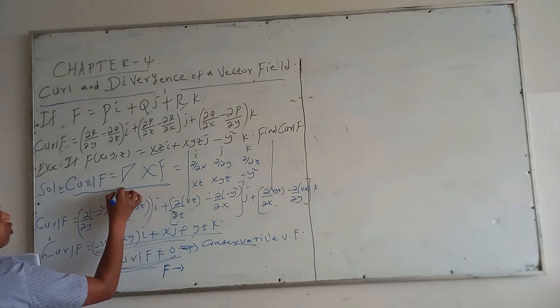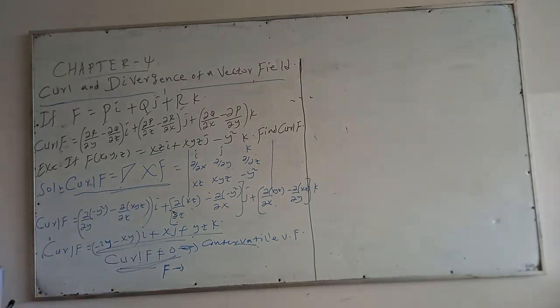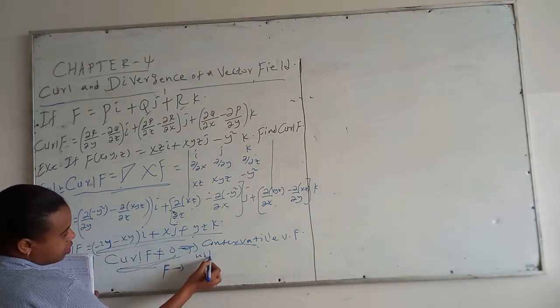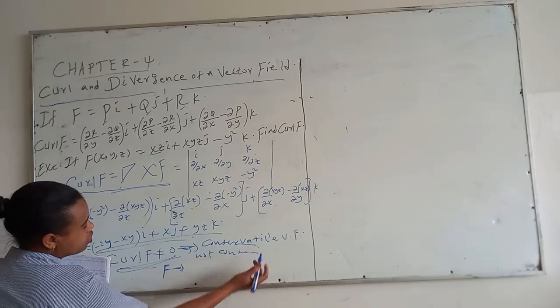Using the same formula: if the del operator cross product gives 0, the vector field is conservative. If the result is different from 0, the vector field is not conservative.